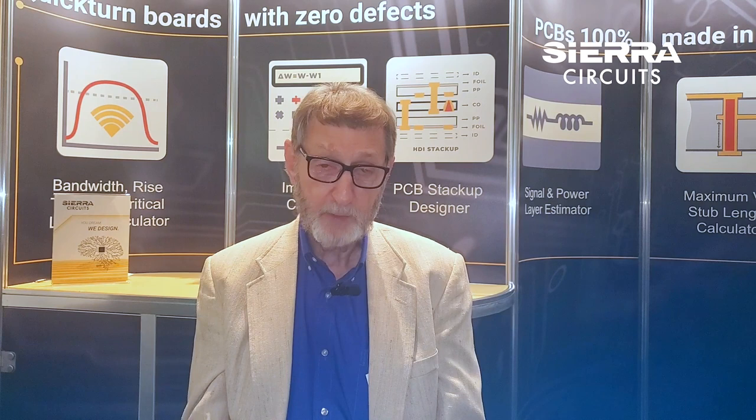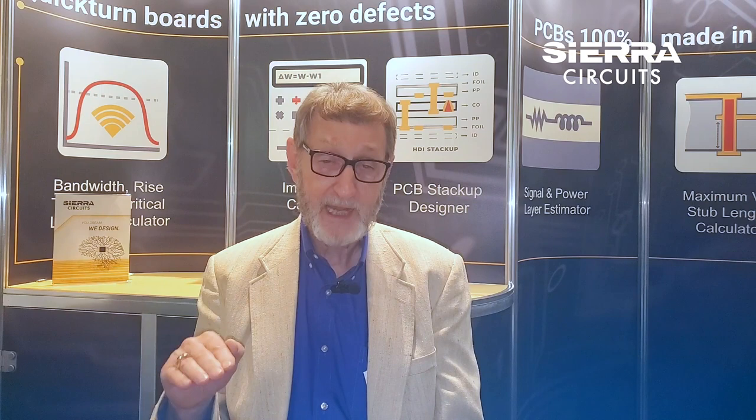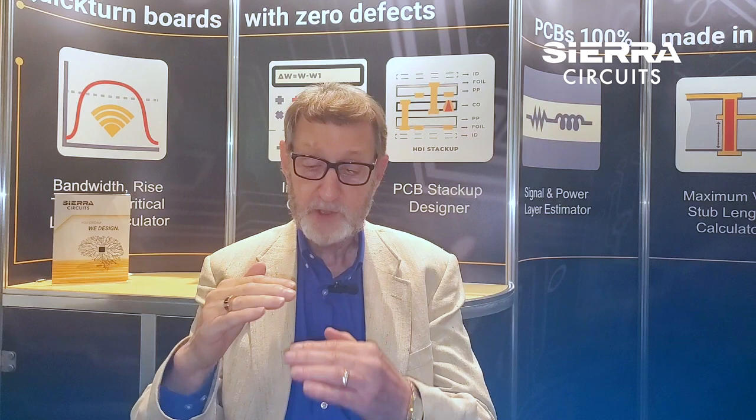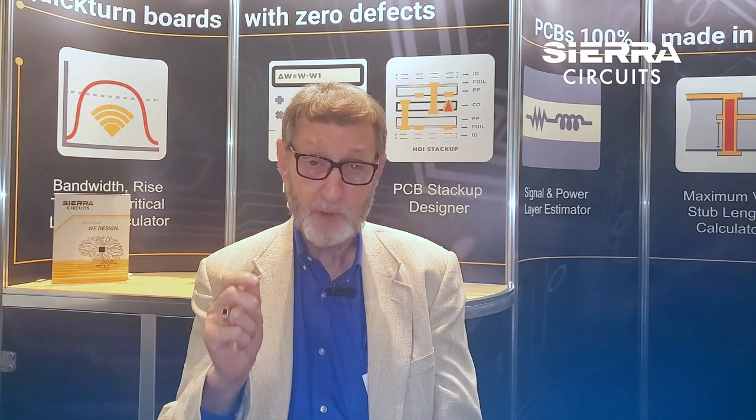When somebody tells me they have an EMI problem, a noise problem, or an internal interference problem, the very first thing I ask is: what is the stack-up of your circuit board — which layers are signal, which are power, and which are ground? And 99% of the time when they have a problem, it's because they've established a poorly designed board stack-up. The bottom line to prevent these problems in all future designs: every signal layer should be one dielectric space above or below a ground plane, and every power layer should be immediately next to a ground plane. If you follow that standard, you will prevent problems 99.9% of the time.